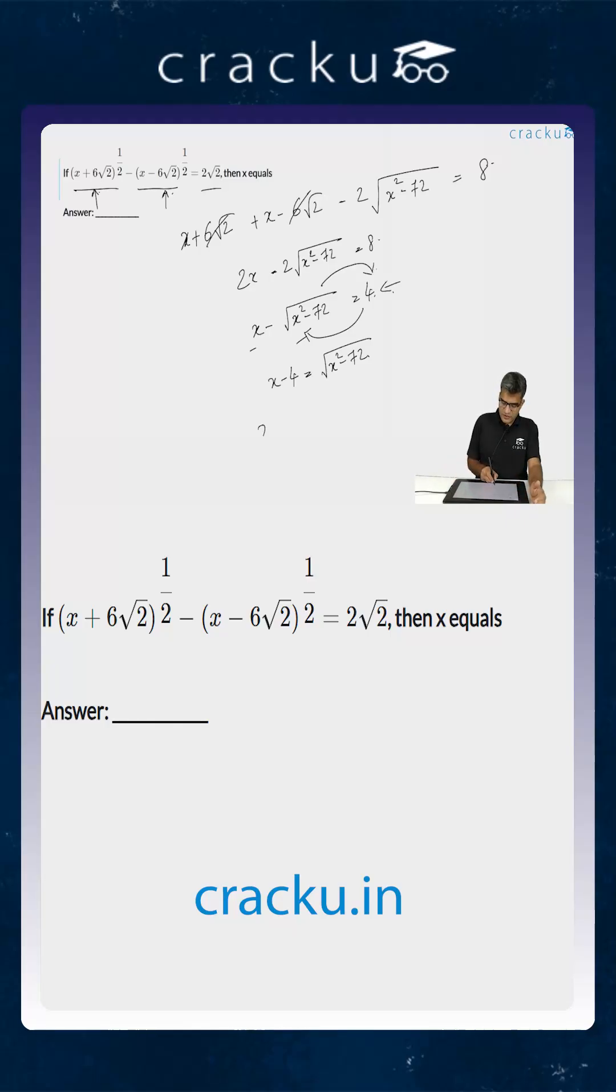Now if you are squaring, you are going to get x square minus 8x plus 16 is equal to x square minus 72.